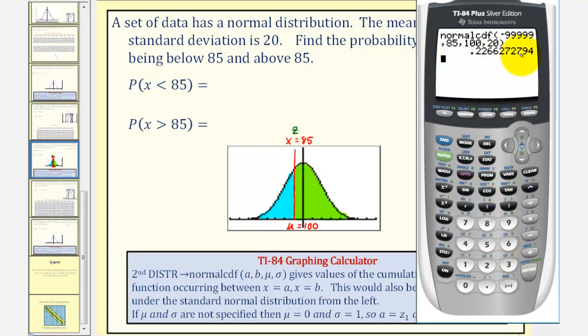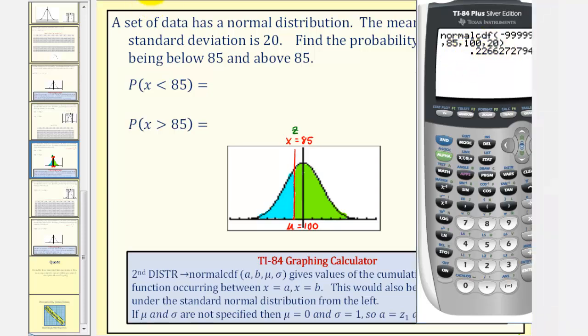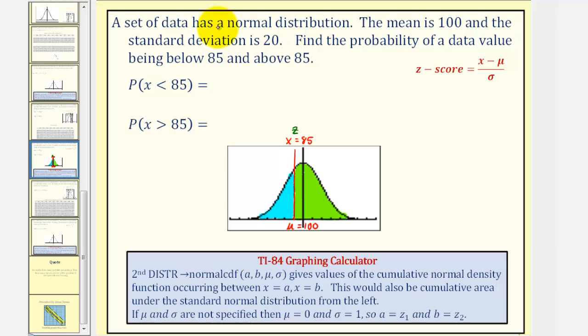This represents the cumulative area under the standard normal distribution to the left of X equals 85. And therefore the probability that X is less than 85 is approximately 0.2266. Which means the probability that X is greater than 85 would be 1 minus 0.2266, which would be 0.7734.